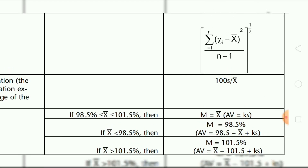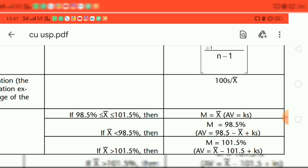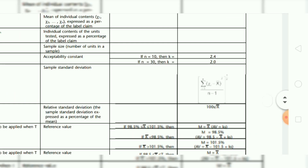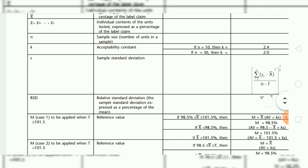The sample standard deviation s is calculated as: the square root of the sum of (xi minus x-bar) squared, divided by (n minus 1). RSD is the relative standard deviation — the sample standard deviation expressed as a percentage of m.